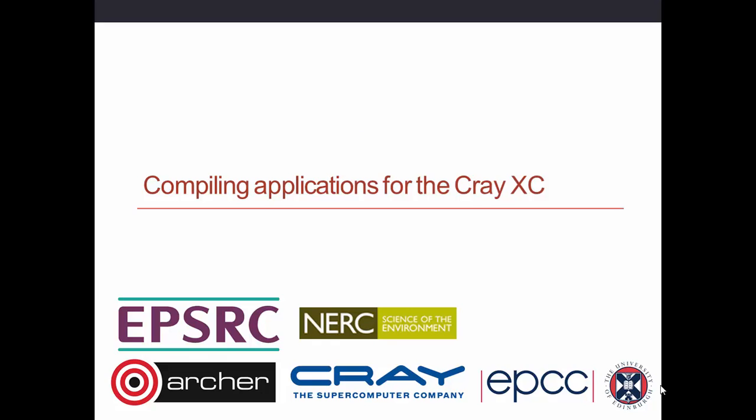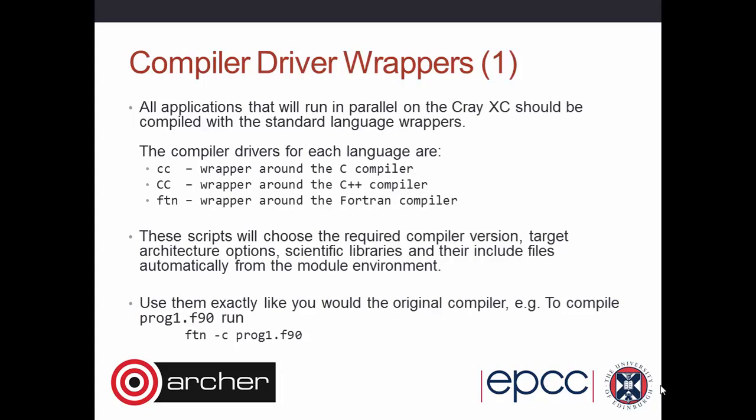How do you actually compile applications for the Cray? The compilers on the Cray are always called the same thing: the C compiler is always lowercase 'cc', the C++ compiler is always uppercase 'CC', and the Fortran compiler is always called 'ftn'. These are actually driver wrapper scripts, and what compiler is actually executed depends on which module you have loaded.